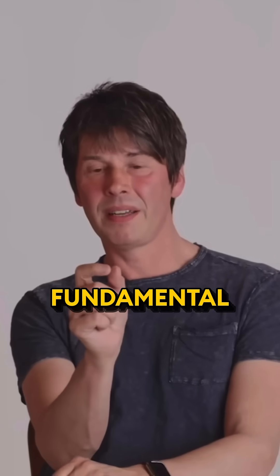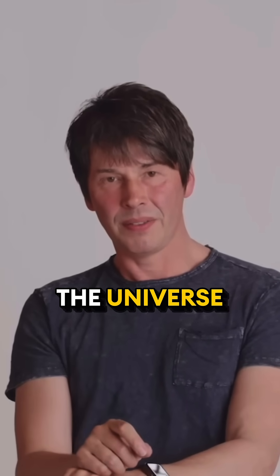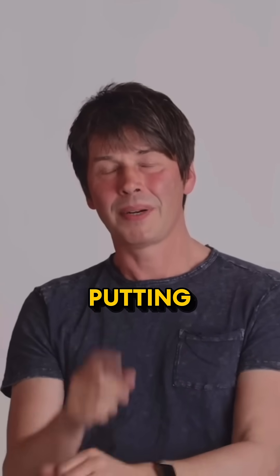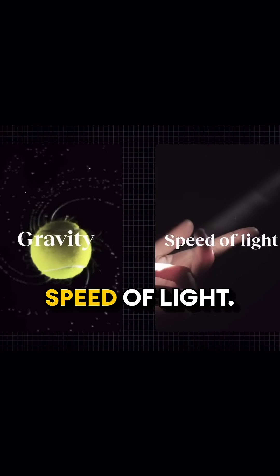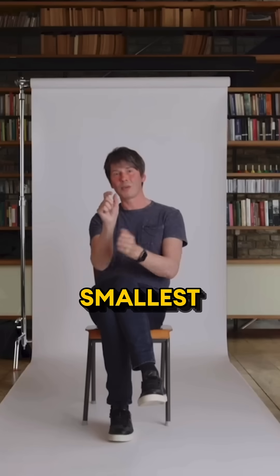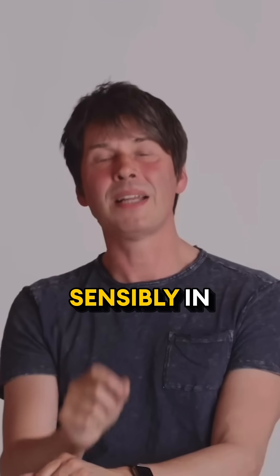What's a Planck unit? It's a fundamental distance in the universe that you can calculate by putting together things like the strength of gravity, Planck's constant, speed of light. It's the smallest distance that we can talk about sensibly in physics as we understand it.